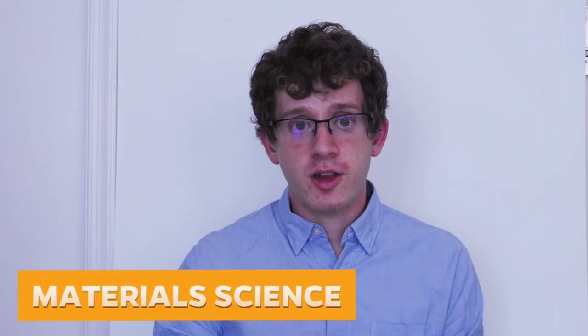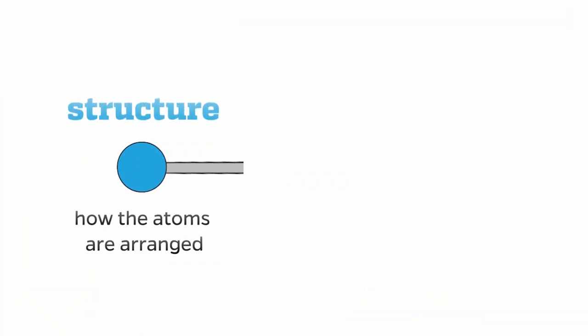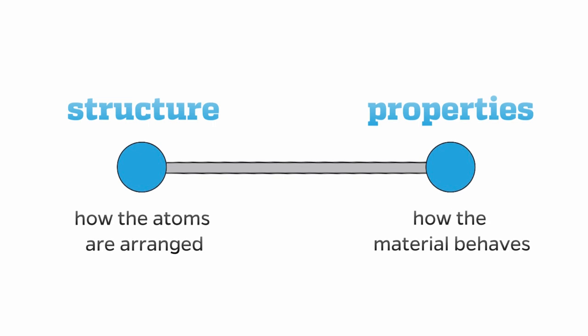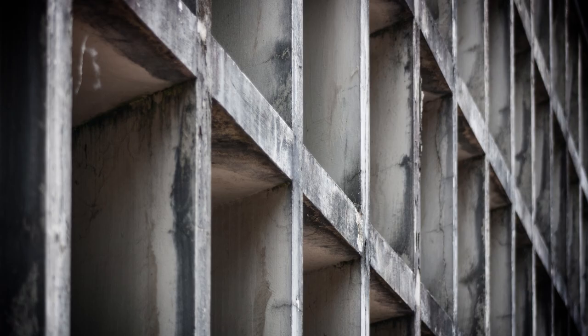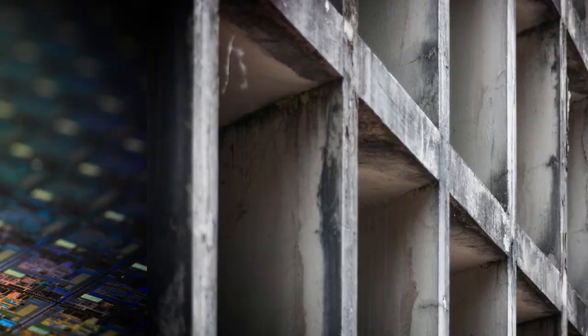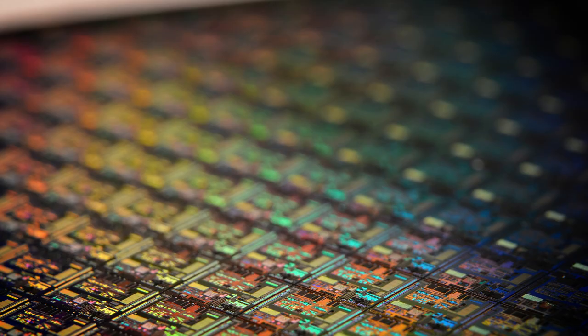But first, what is material science? Put simply, material science is the study of the relationship between a material's structure — or how the atoms are arranged — and its properties, or how it behaves. And by materials, we really mean everything you can see around you, from building materials like steel and concrete to electronic materials like silicon.